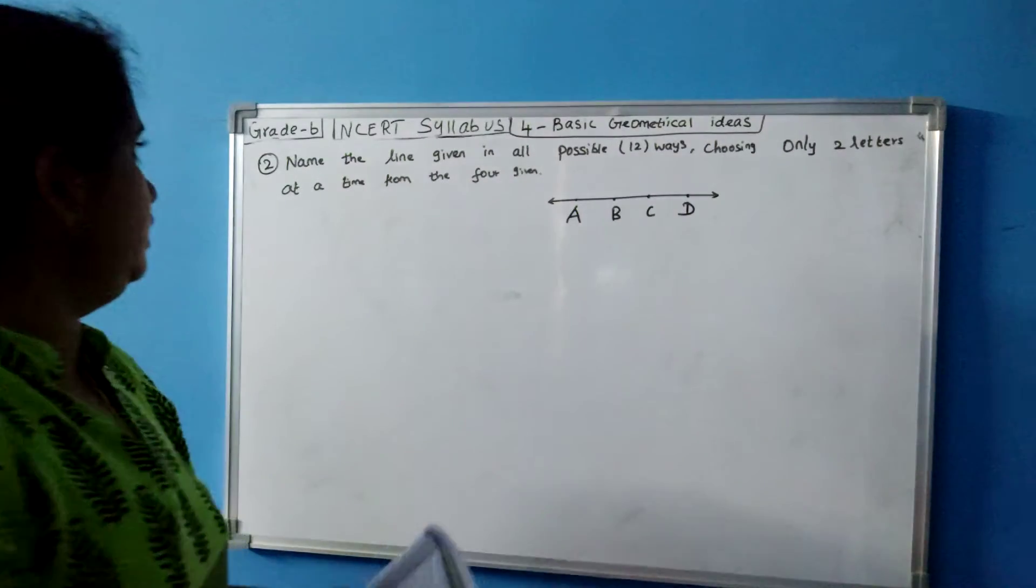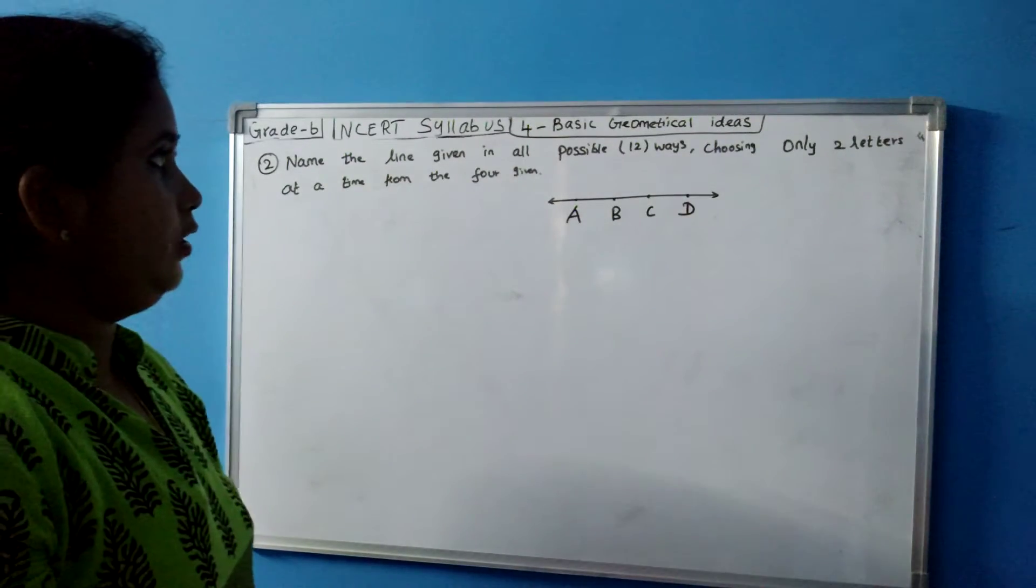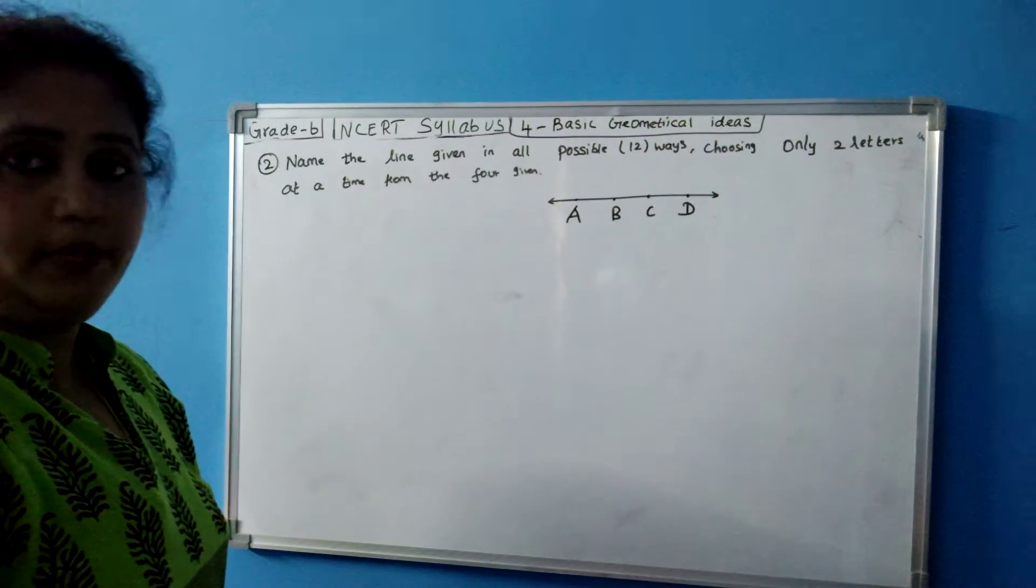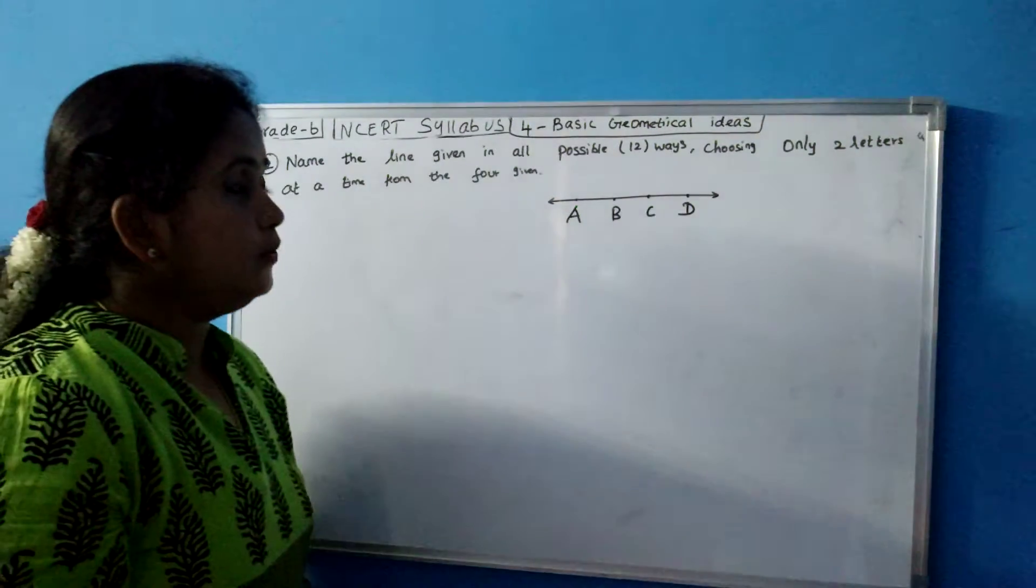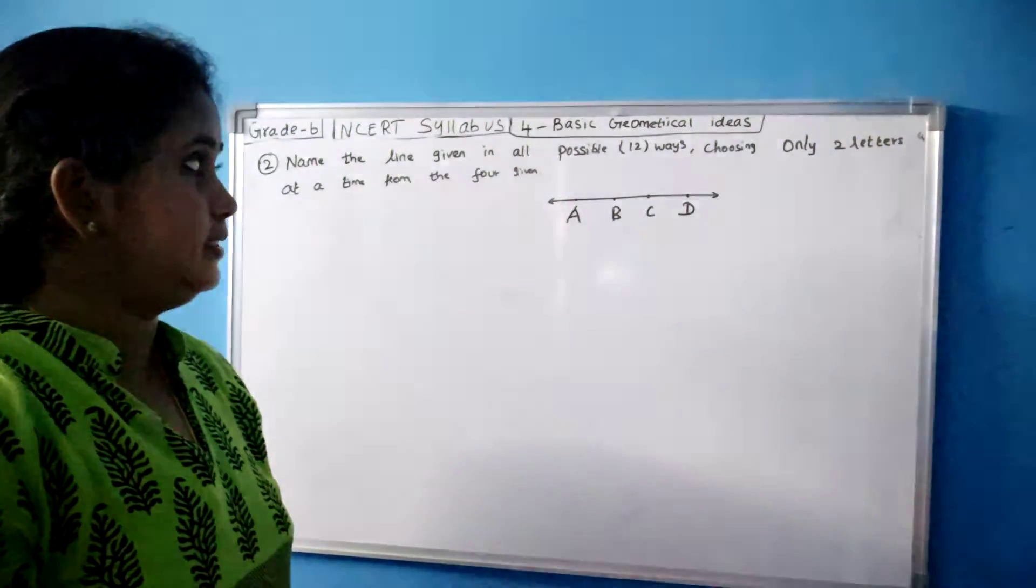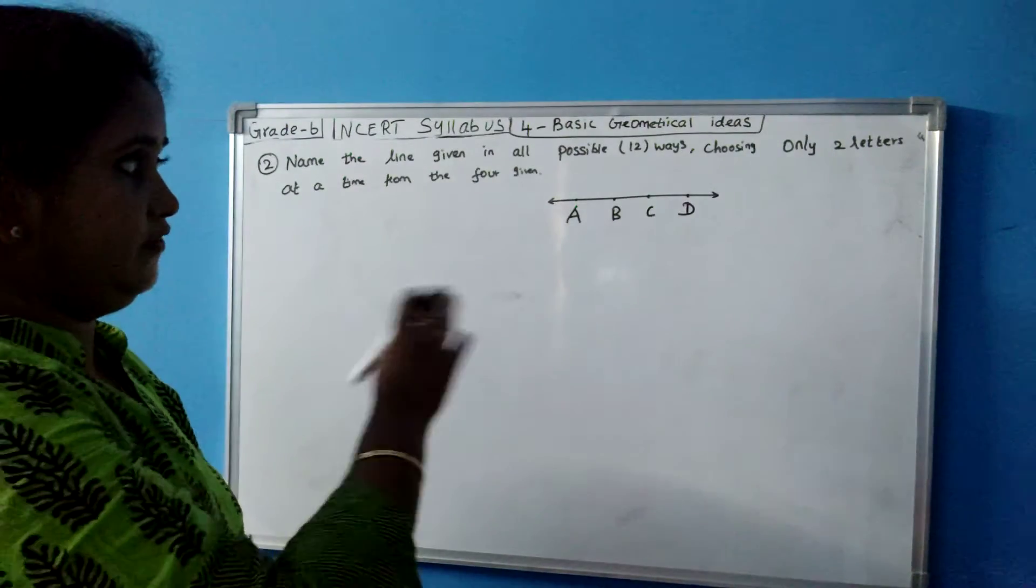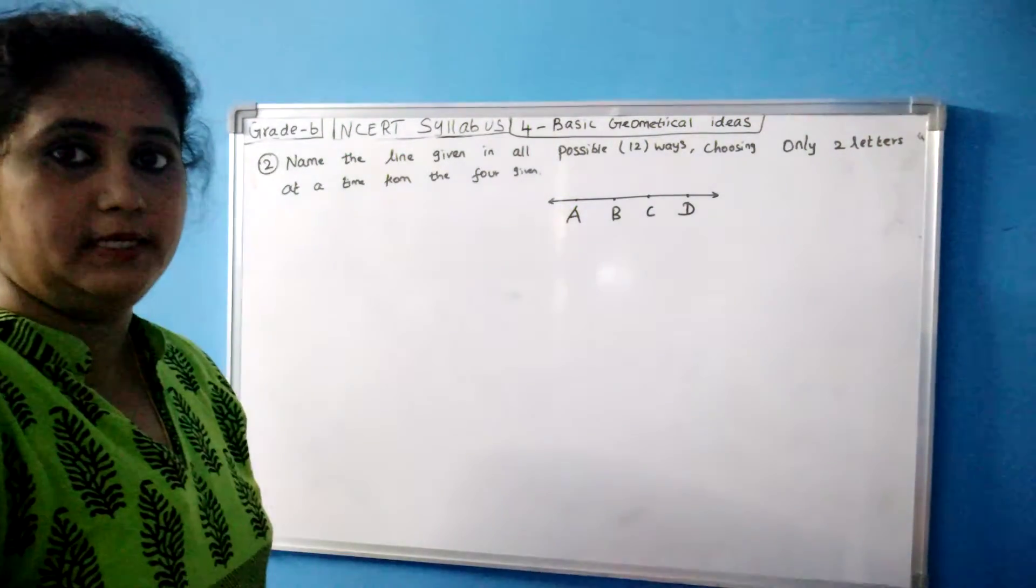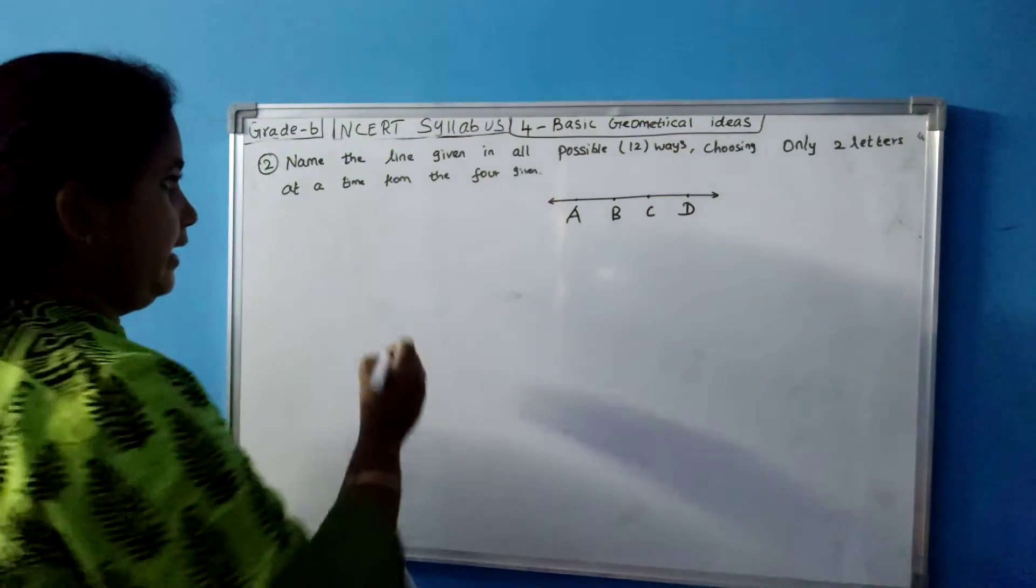So this is your next question. Name the line given in all possible 12 ways. So 12 ways you are going to name the line. Choosing only 2 letters at a time. So you have to choose only 2 letters, that is the condition from the 4 given. From this you have to choose only 2 letters so that you get the line.